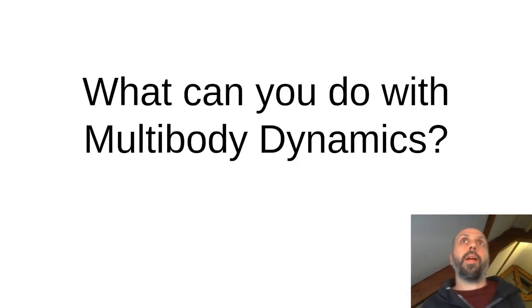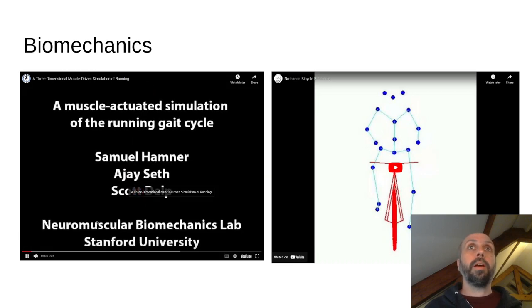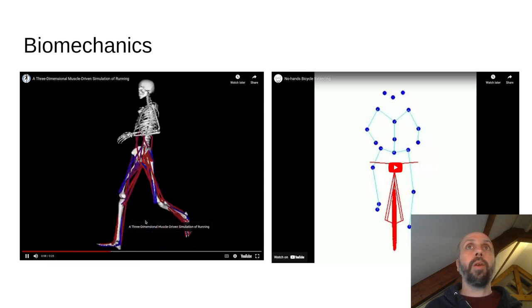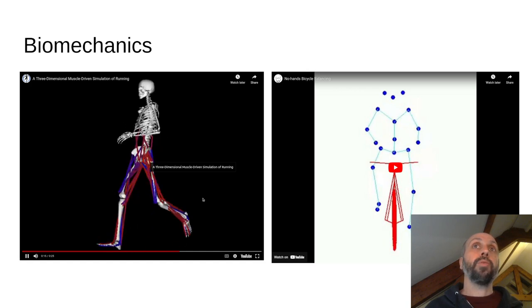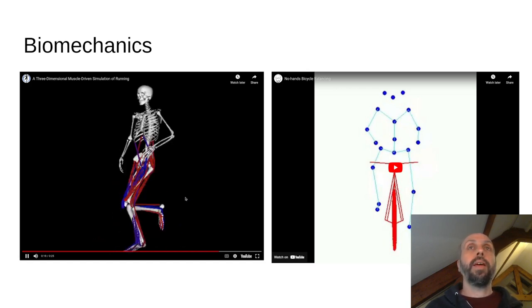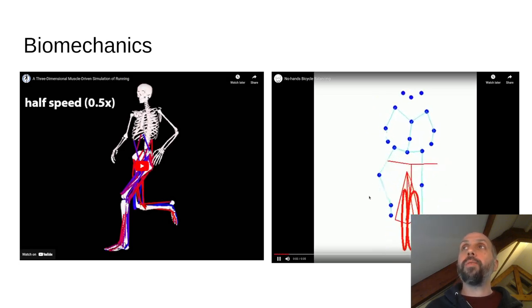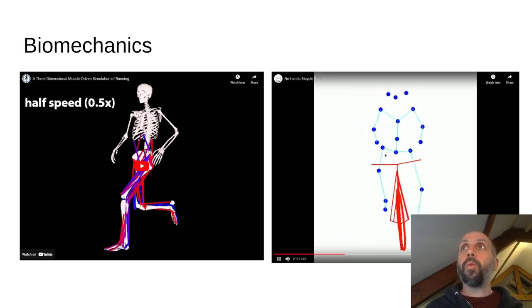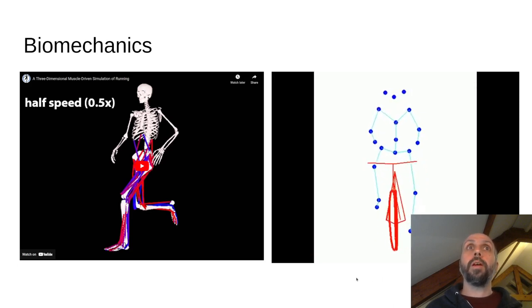So what can you do with multibody dynamics? I'll just show a few examples here in terms of video. So I'm in the biomechanics department, and we study the motion of humans. You may have taken Professor Seth's class. This is an OpenSim simulation of a runner. Each of the skeletal elements of this body are modeled as rigid bodies, and we have to use multibody dynamics to understand how they can move under the forces of the different muscles present. On the right, I have some motion capture of no-handed riding and balancing on a bicycle that I did in a study.